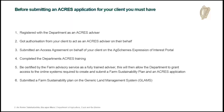Once that's done, you have to be certified by the farm advisory service to be a fully trained advisor. That means you have to have done whatever training they require and have whatever paperwork they need submitted. They will send your name to the department and the department will give you access to the online systems. You then have to go into the GLAM application and submit a farm sustainability plan before you can go to ACRES and submit the ACRES application.